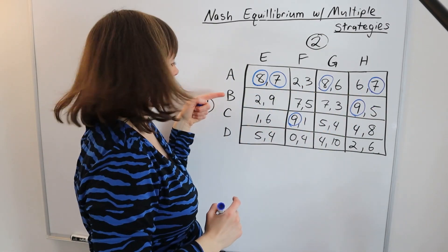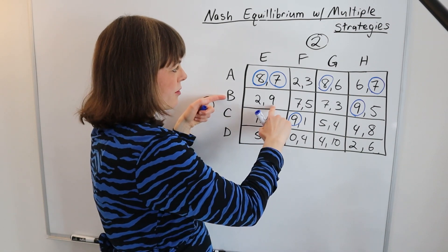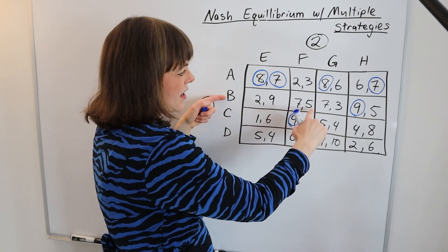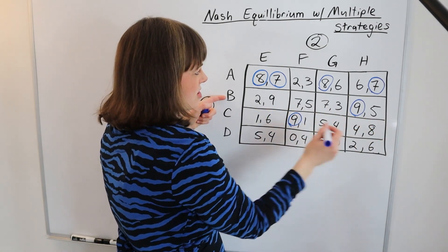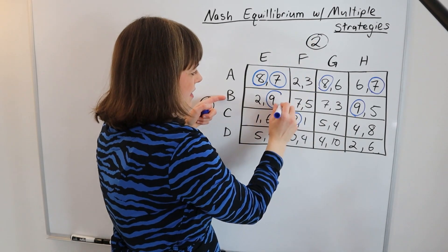Then player two says, what if player one goes B? Will I prefer to have done E, F, G, or H? Player two prefers E in that case.